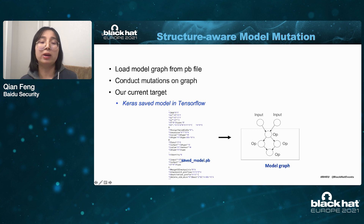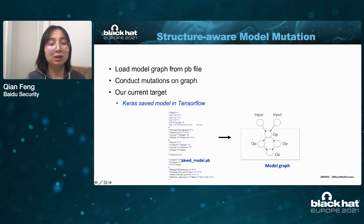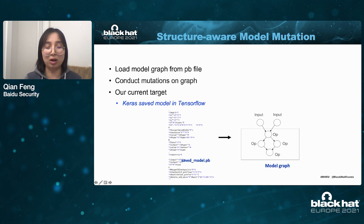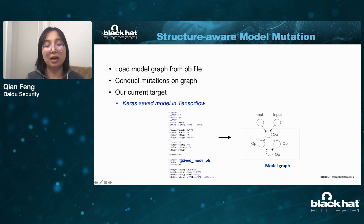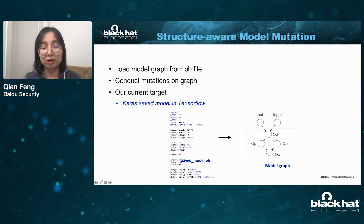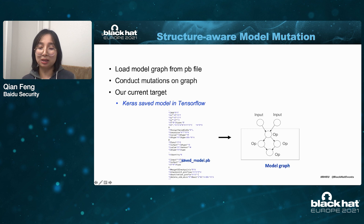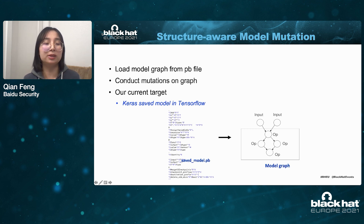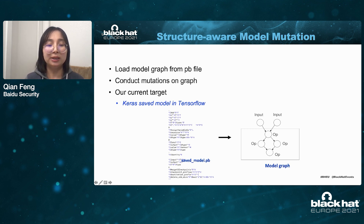Our solution is structure-aware model mutation. Our structure-aware model mutator will load the model from the saved model files, construct the model graph, and conduct mutation on this graph. For example, the left side shows serialized data — a saved model — and after conversion it becomes a model graph. We can directly manipulate this graph to generate different models. Our current scope is to only mutate the CARS model in TensorFlow.